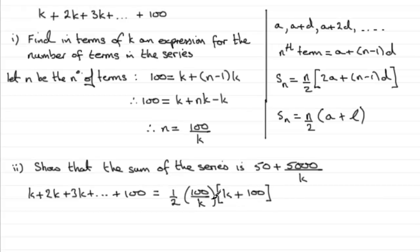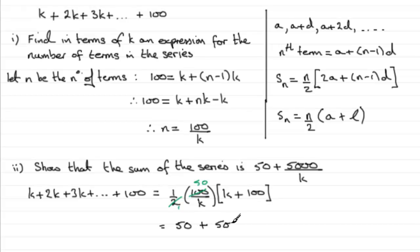We can do a bit of cancelling here — cancel that 2 into the 100, it goes 50 times. Then expanding out, we've got 50 over k times k, which is just 50k over k, or simply 50. And then plus, we've got 50 times 100, so that's 5,000, all over k. And that's what we had to show.